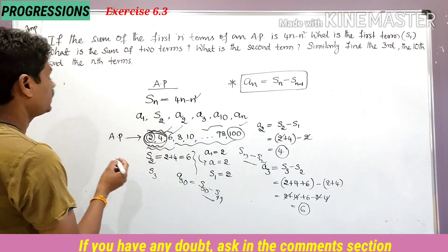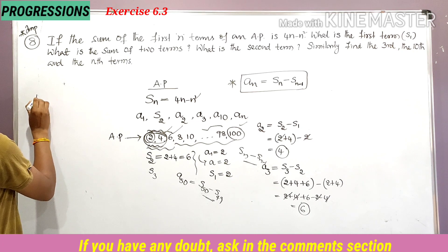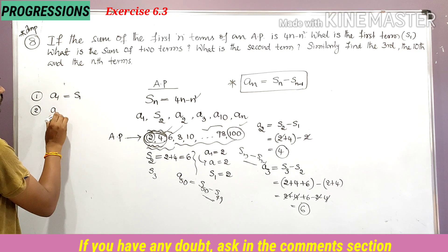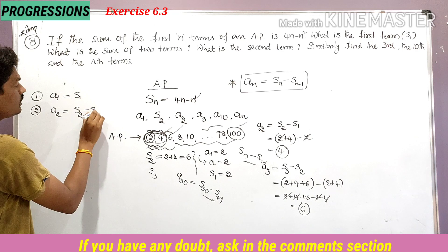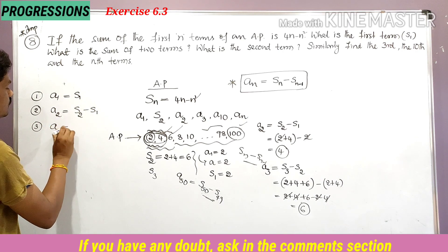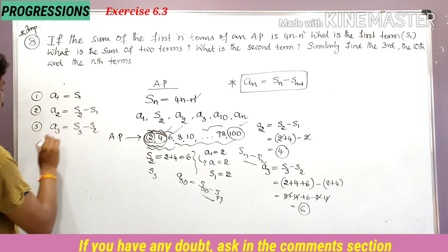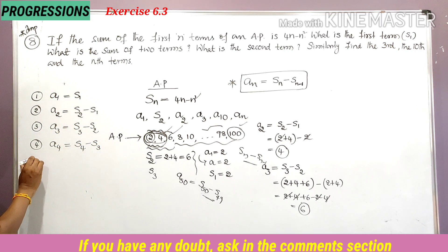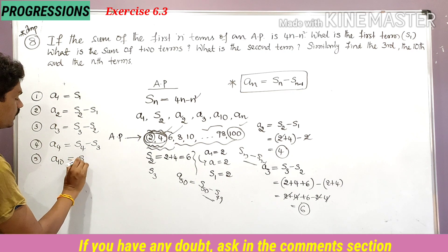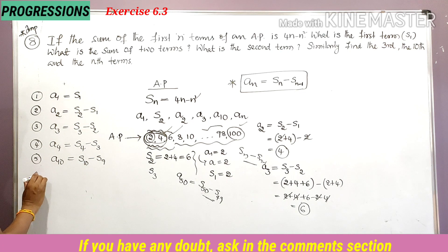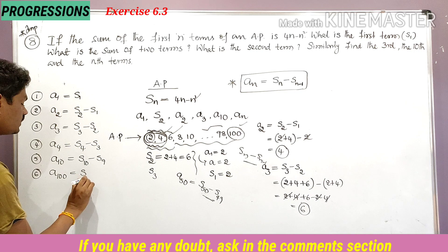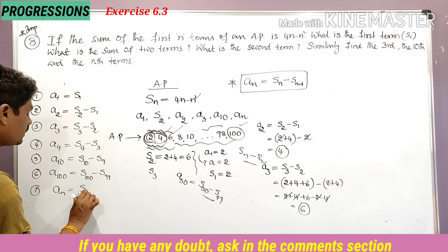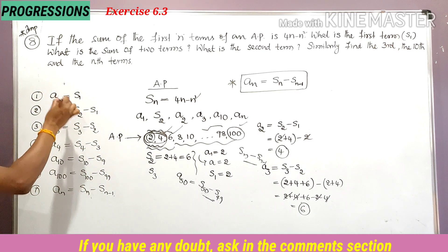To summarize the term formulas: a1 = S1; a2 = S2 − S1; a3 = S3 − S2; a4 = S4 − S3; a10 = S10 − S9; a100 = S100 − S99; and in general, an = Sn − S(n−1). Remember these and you can solve very easily.